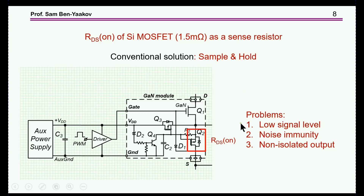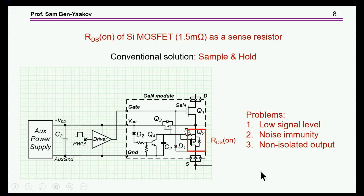However, with the sample-and-hold method there are a number of problems. First, the signal level is rather low, creating a noise immunity problem. Most importantly, the output is non-isolated — the signal is referred to a very noisy node where the current could be 70 amps, while the control card may be elsewhere. Therefore isolation would be very useful.